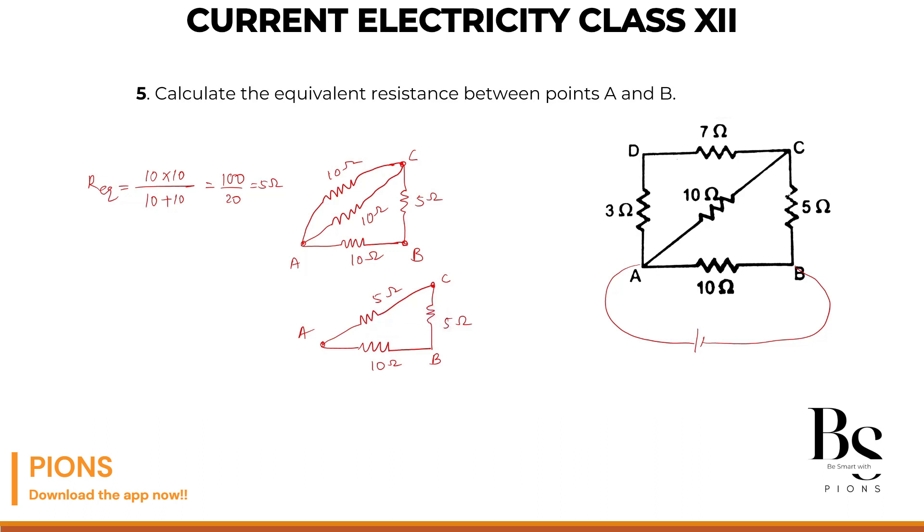5 and 5 series means their equivalent will be 10 ohm. And this will be again 10 ohm between point A and B. So this upper branch, this 5 and this 5 gave you this 10 ohm and this lower 10 ohm was already there.